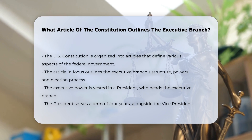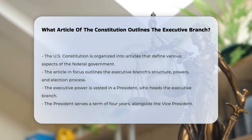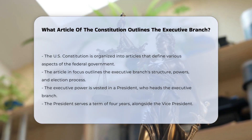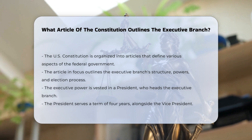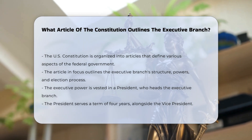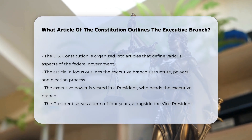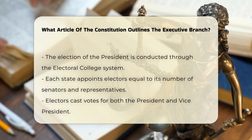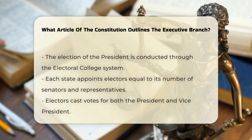This article establishes that the executive power of the United States is vested in a president who serves as the head of the executive branch. The president holds office for a term of four years, and this term is concurrent with that of the vice president.